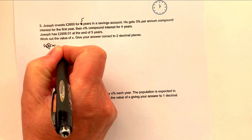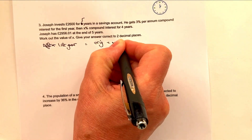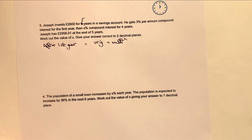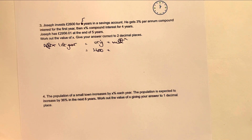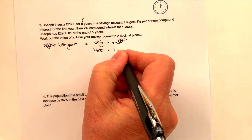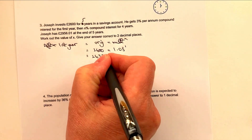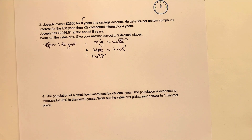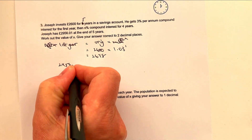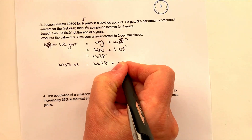After the first year, using original times multiplier to the power of N: the original was £2,600, the multiplier was 103% — that's 1.03 — and it's one year. So at the end of the first year he's got £2,678. Now we do exactly the same as the previous question, using the same formula: we have £2,956.01, which equals the original £2,678 multiplied by the multiplier to the power of 4, because it's a further four years.